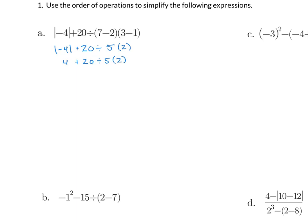As I mentioned, we want to do multiplication and division from left to right. So my next step is going to be 20 divided by 5, which gives us 4 times 2. Next step is going to be to multiply: 4 times 2 is 8, and then we add and get 4 plus 8 is 12.